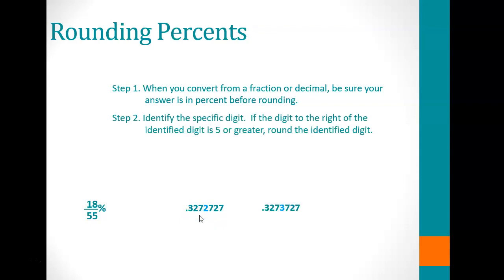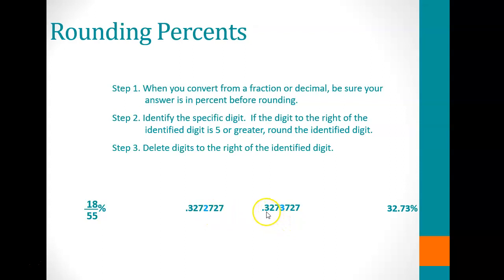When we round that number — if we want to carry it out to the fourth decimal place — we look at the number behind it, in this case the 7. If that number is 5 or higher, the 2 rounds up to 3. If it is 4 or lower, it stays as 2. Because the number is 7, we round to 0.3273. Moving the decimal two spaces to the right gives us 32.73%.